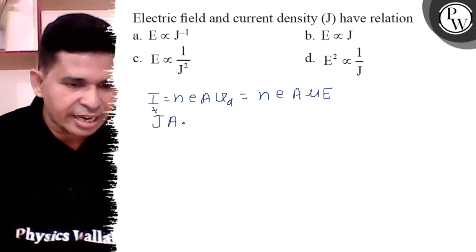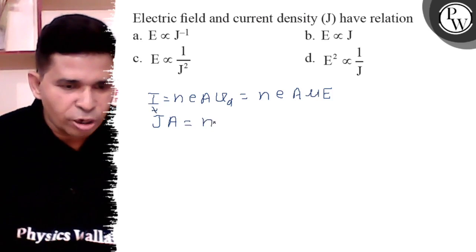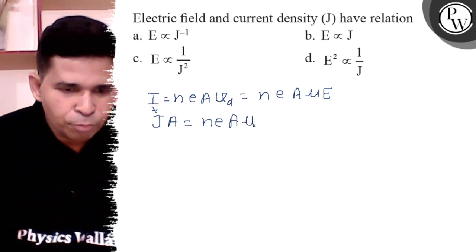Current can be written as, so J is equal to n e A mu E.